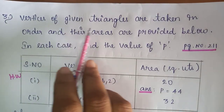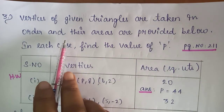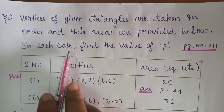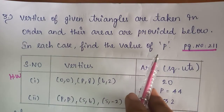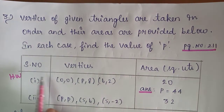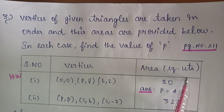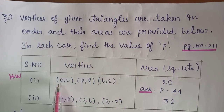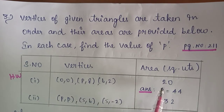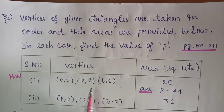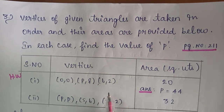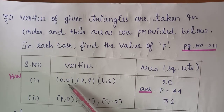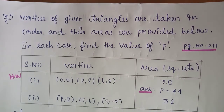Problem number 3 — vertices of given triangles are taken in order and their areas are provided. Find the value of p. First subdivision (homework): points (0,0), (p,8), (6,2) with area = 20. Using the area formula, substituting x1, y1, x2, y2, x3, y3, you get p = 44.